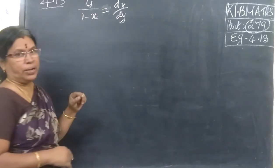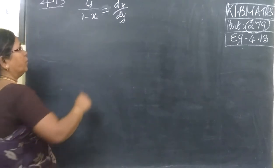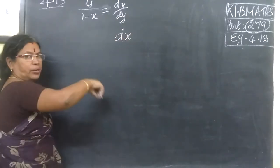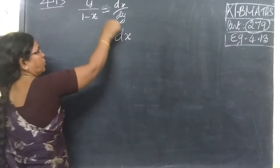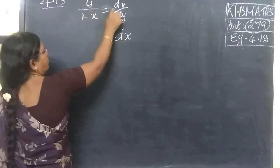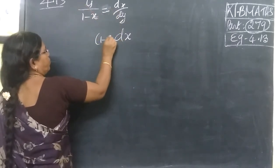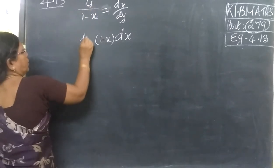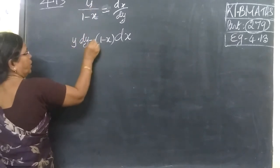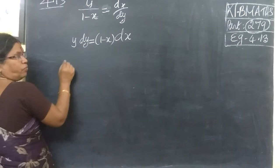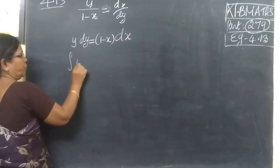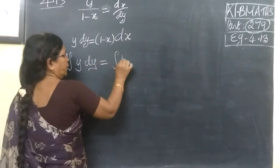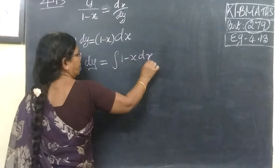Y by (1 minus X) equals dx·dy. If you have a question, dx·dy is the numerator. So that is cross multiply — this is cross multiply in the denominator: (1 minus X). If you cross multiply, dy·dy equals y equals. So now we integrate on both sides: integral y dy equals integral (1 minus x) dx.